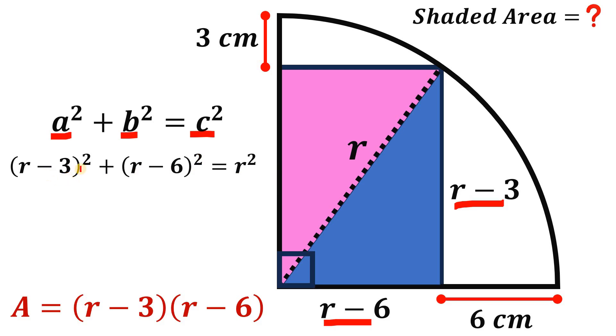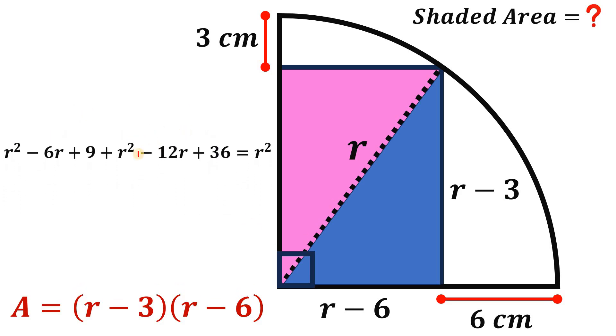Now, if we expand (R minus 3) squared and (R minus 6) squared, we have something like R squared minus 6R plus 9. This is R minus 3 raised to the power of 2. And we have plus R squared minus 12R plus 36. This is the expansion of (R minus 6) raised to the power of 2. Then bring down R squared. Now, let's focus on this result. And what we're going to do is to subtract R squared on both sides to eliminate these R squareds. So we have here R squared minus 6R plus 9 minus 12R plus 36 equals 0.